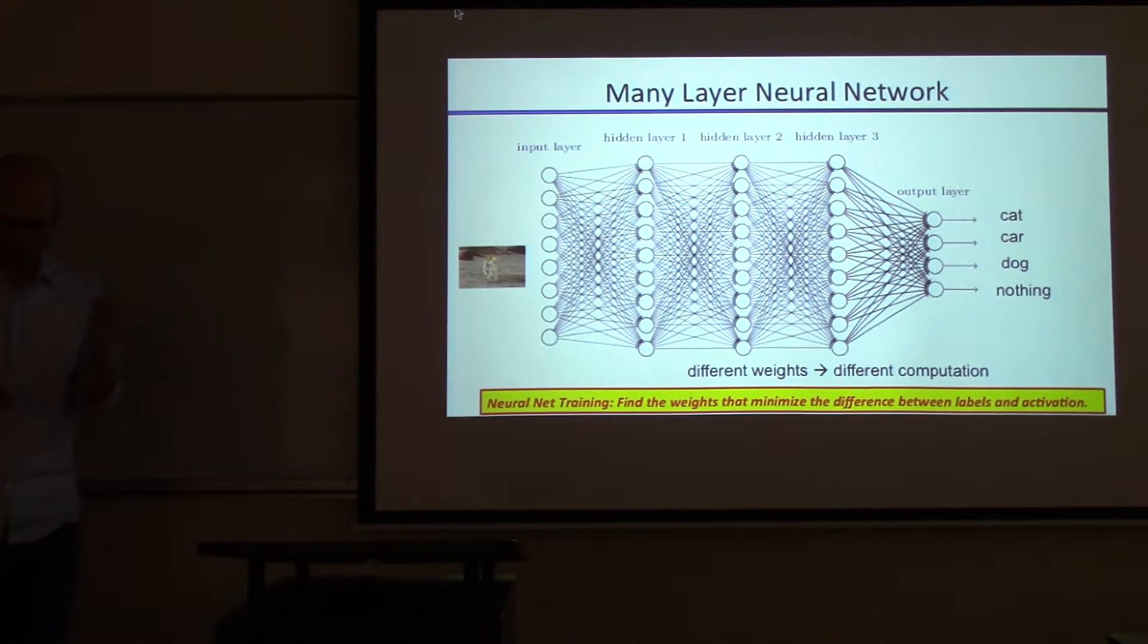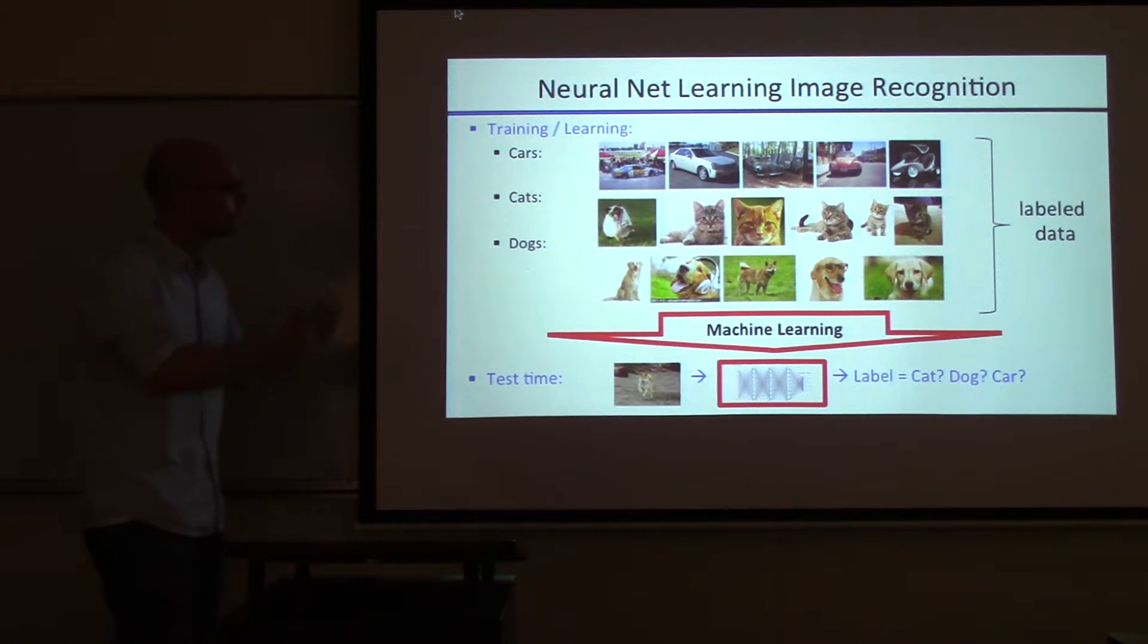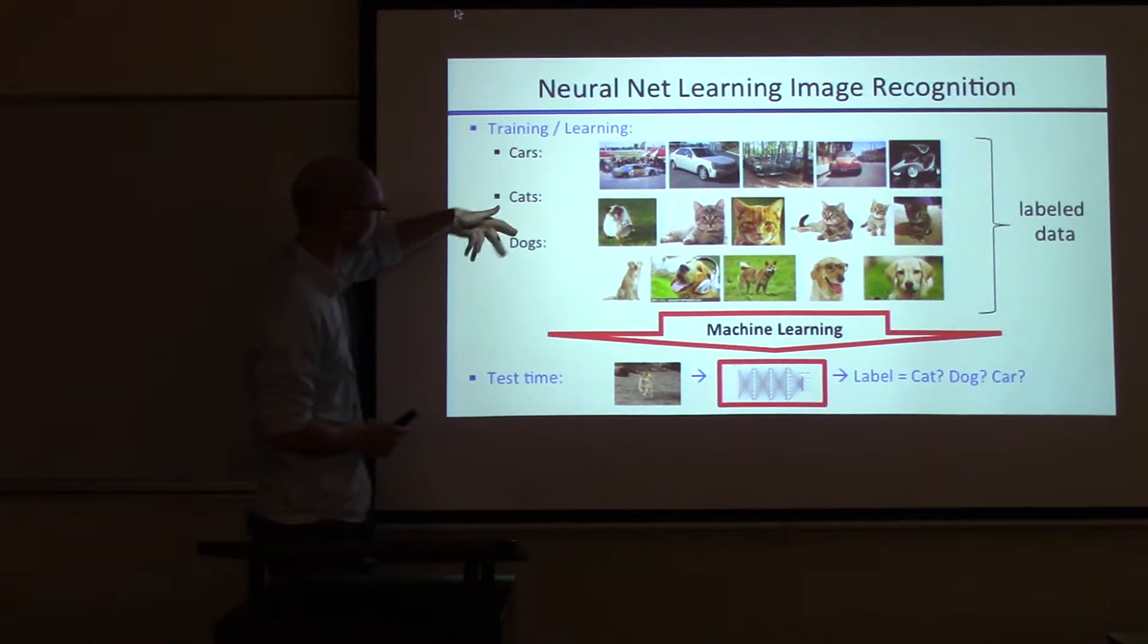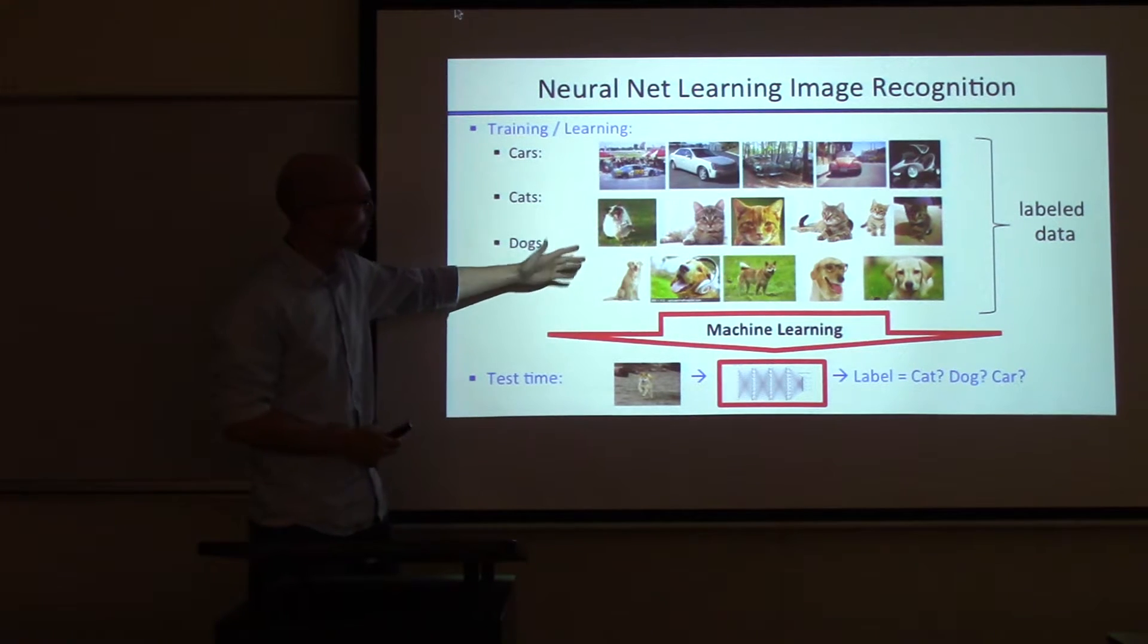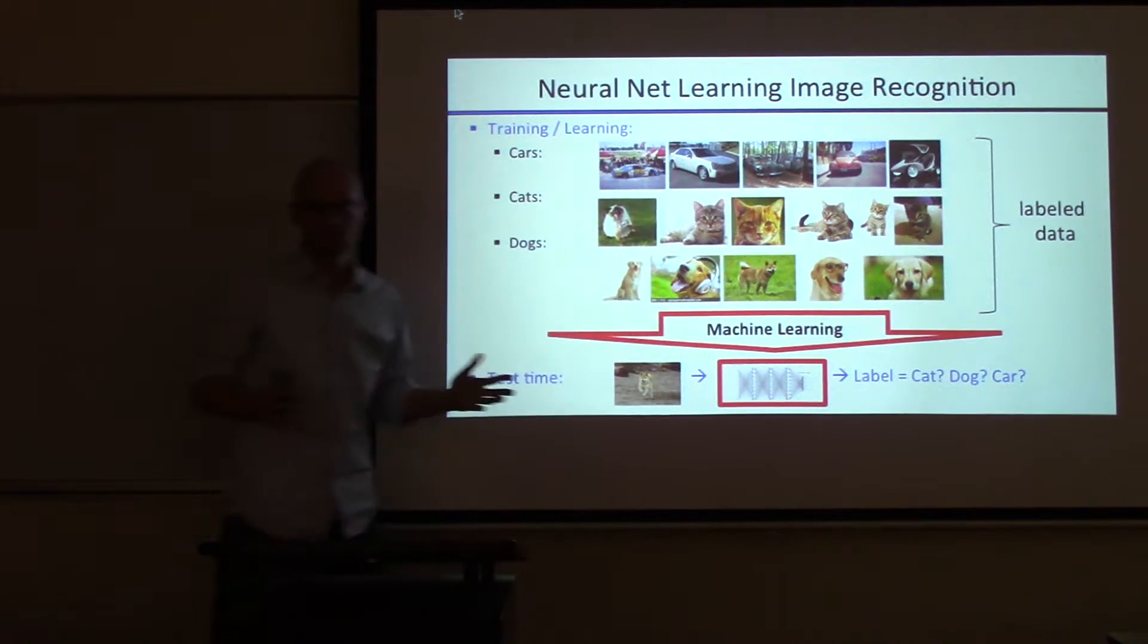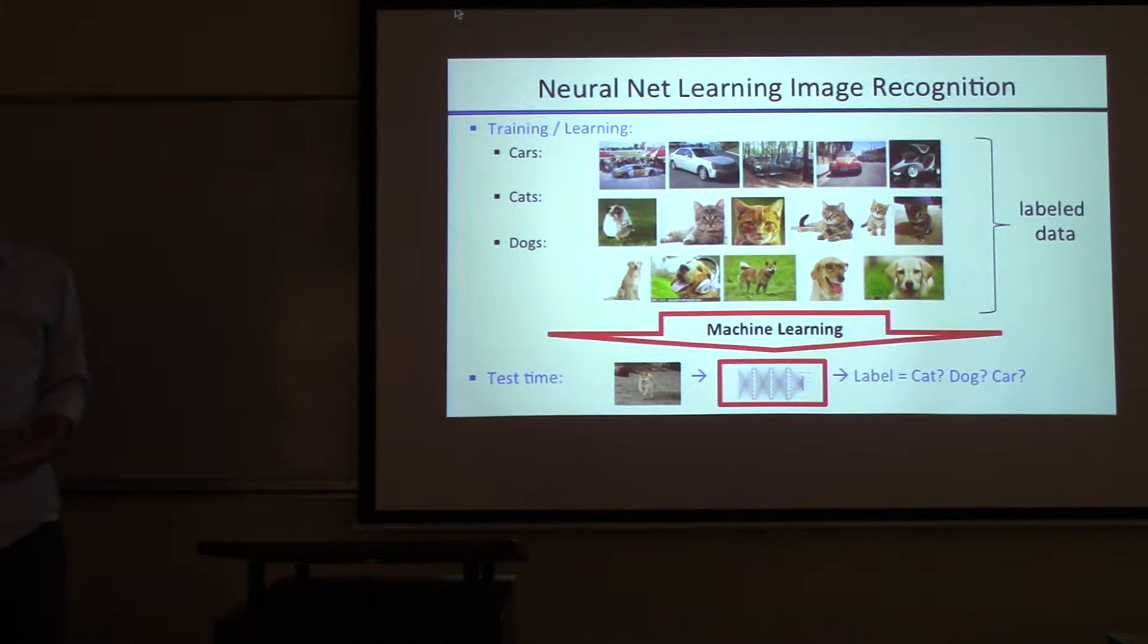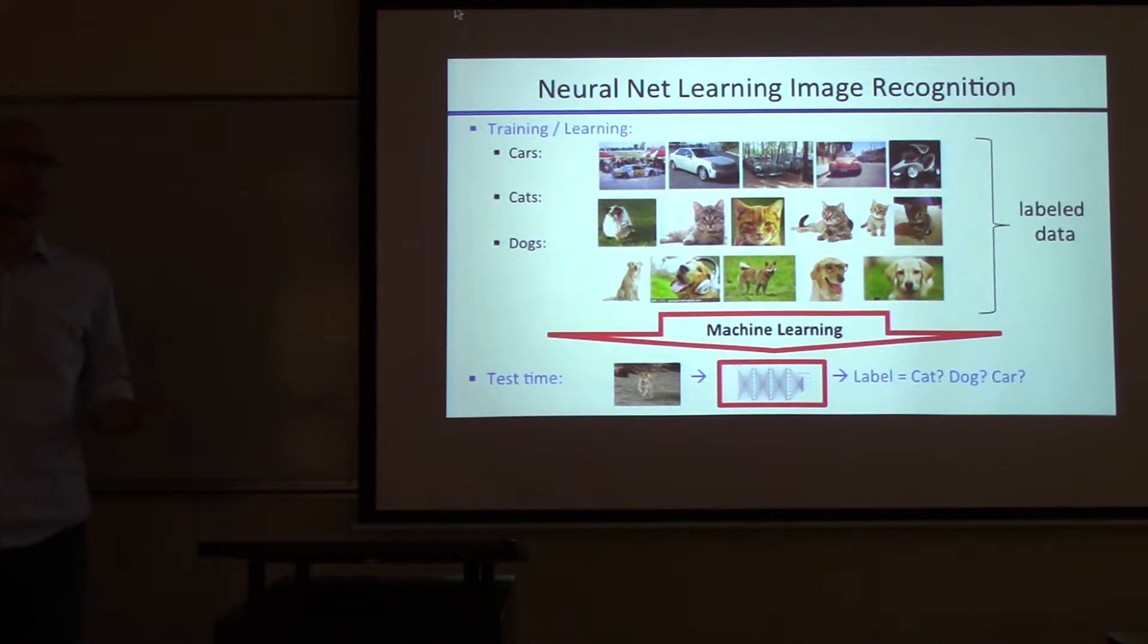Keep in mind that the weights sitting here completely determine what it'll do, and the weights are being learned from data. You don't tell it these are the weights. You actually feed it data. You would build a dataset, a bunch of images of cars, cats, dogs. You feed them into this learning process.